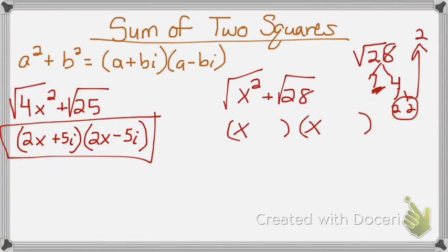So the way I would write it is plus 2i radical 7 and minus 2i radical 7. That's my answer!